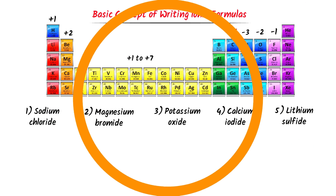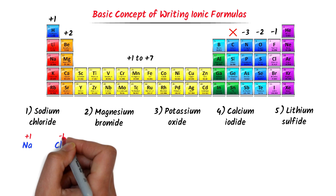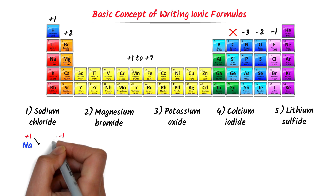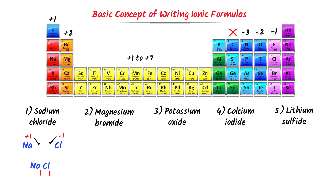Now let me write the chemical formulas of these ionic compounds. Sodium is present in group 1, so its oxidation state is positive 1. Chlorine is present in group 7, so its oxidation state is negative 1. I cross their respective charges — I write 1 and 1. Remember that we do not write 1 as a subscript in any chemical formula. So I get sodium chloride, NaCl.